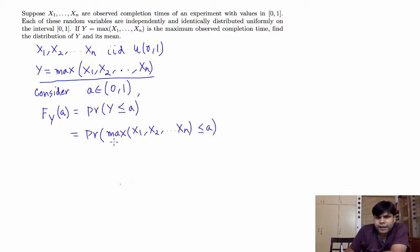Notice that this max x1 to xn can be written in an alternative way. We can actually write it as x1 is less than a, x2 is less than a, and xn is less than a.